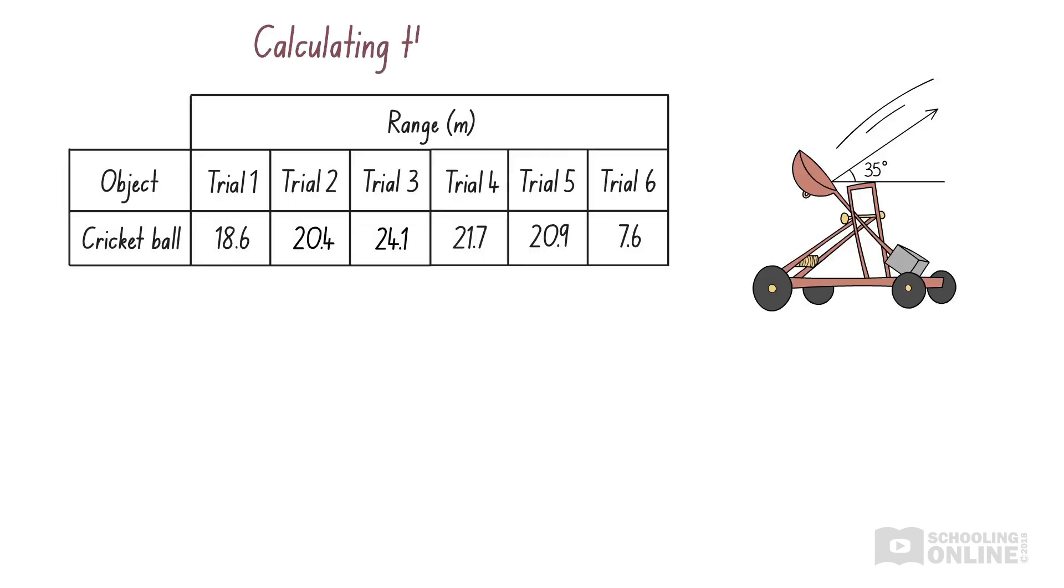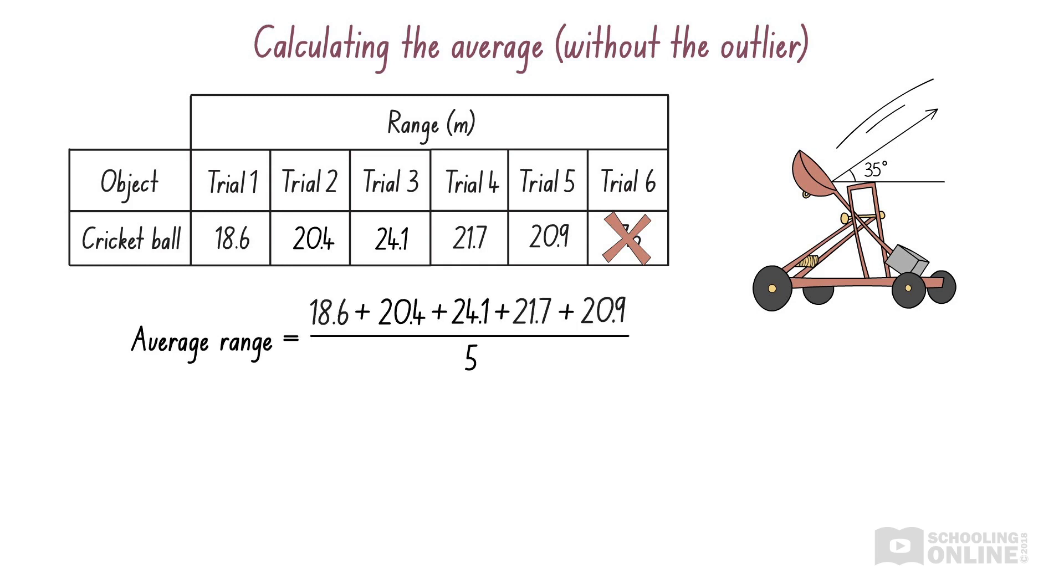Let's see how this applies to the experiment where we measured the range of the cricket ball. Firstly, we need to remove any outliers. Then, we find the sum of all the measurements and divide by the total number of measurements, which is 5. Finally, we round the average to the correct number of significant figures. Each range is given to 3 significant figures, so we round the average to 3 significant figures.